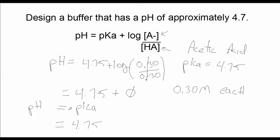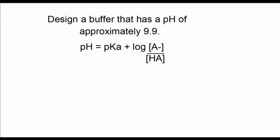Now I'd like for you to try a buffer problem. Design a buffer that has a pH of approximately 9.9. There's your buffer equation. I suggest you look in your book at the table where you have a list of acids, weak acids, and the corresponding pKa's. Start there. Come back in a minute and check your answer.